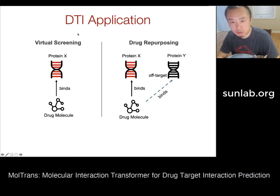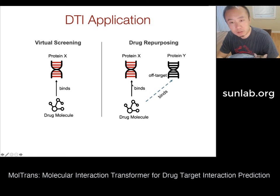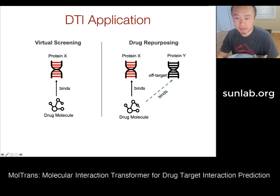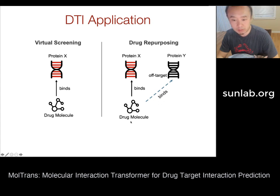Important applications of drug-target interaction include virtual screening of new drug candidates, where you screen potential drug molecules against various proteins to see if they will bind. It can also be used for drug repurposing — screening an existing drug molecule that binds with protein X for one disease, and checking if it also binds with another protein Y as an off-target interaction, leading to a new indication.